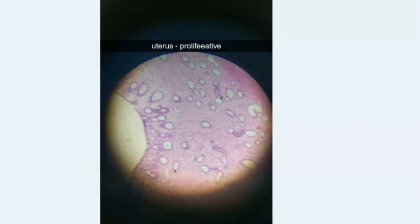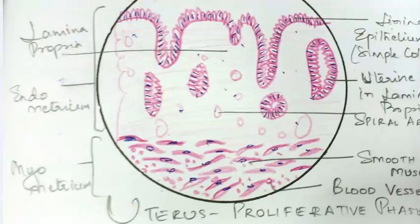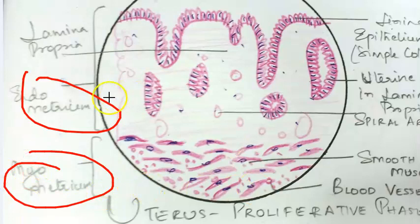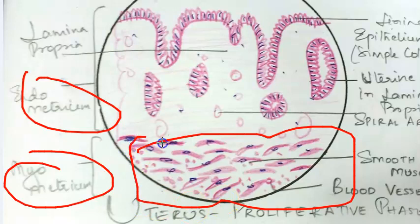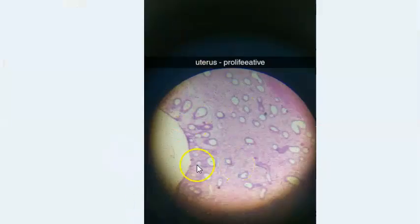Looking at the endometrium in the proliferative state - the layers here are the endometrium and the myometrium. In the endometrium you can see spiral arteries, and this is the myometrium which has a lot of smooth muscle. Because there is smooth muscle content in the myometrium, that's why we now study leomyoma.